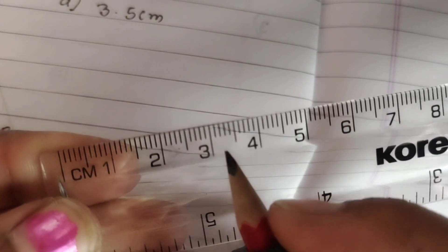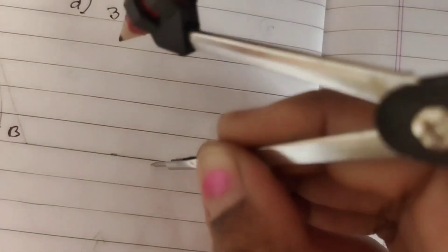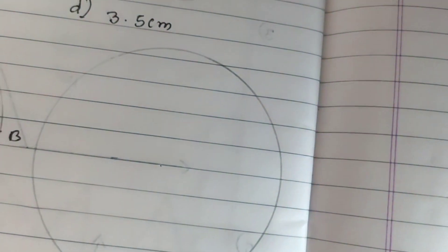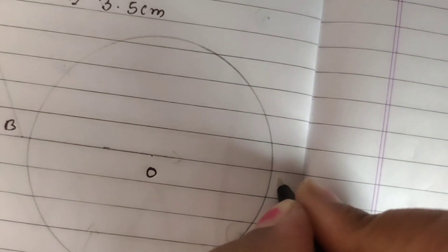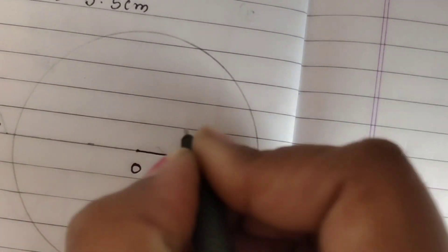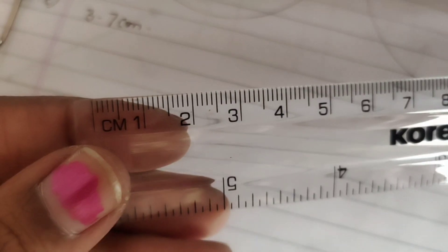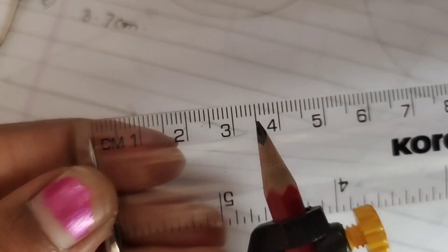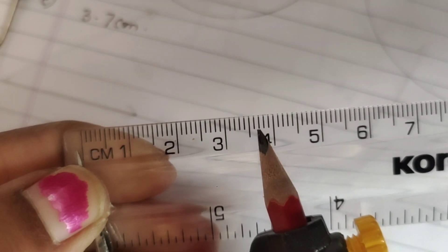Next one, measurement 3.5. Correct, 3.5 I will draw the circle. O C, 3.5 cm.